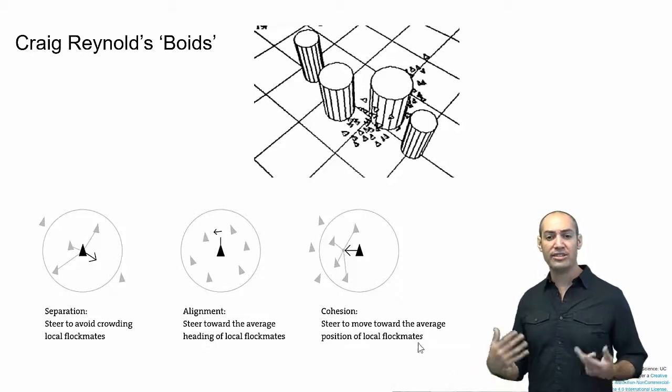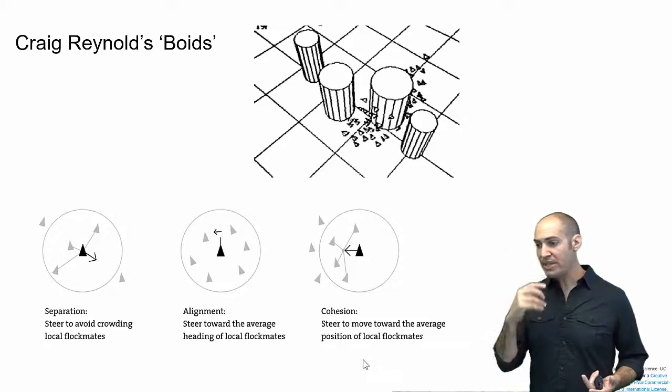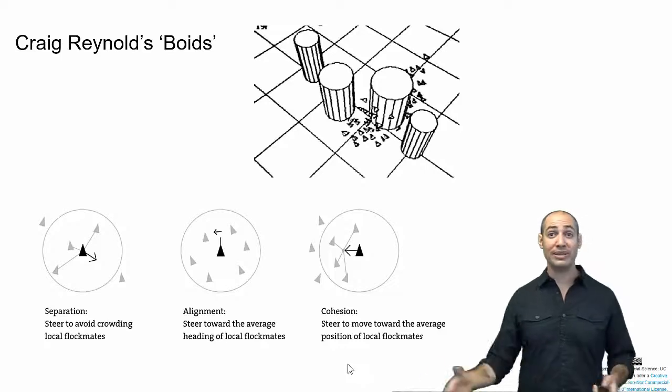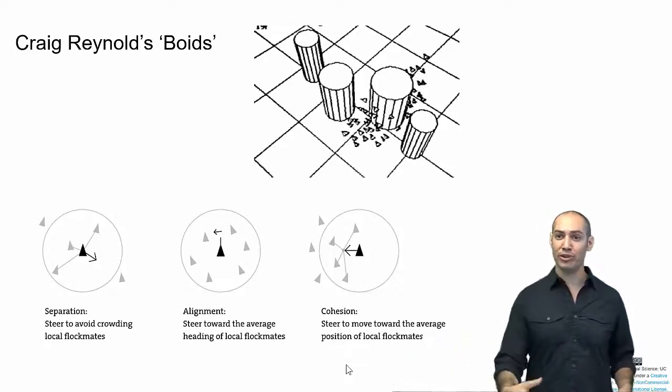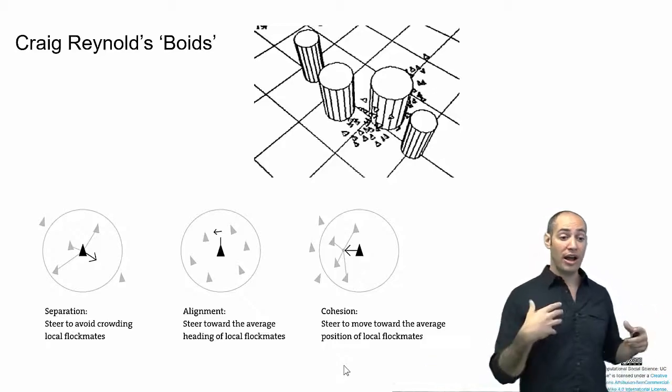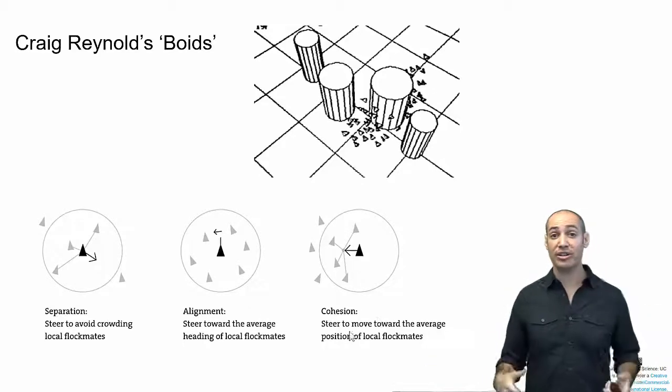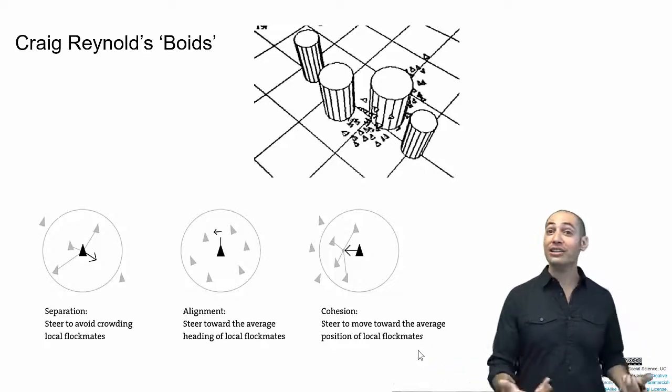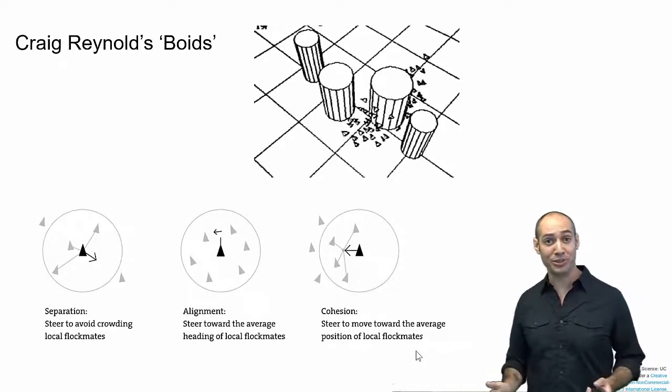And the third is cohesion. It means if I get too far away from other birds, I want to go toward them. I don't want to be separate from the flock, I want to move toward the flock. So if I don't see enough neighbors near me, I'll look and see which direction most of my neighbors, most other birds are, and I will head that way until I get too close and one of the other rules takes effect.